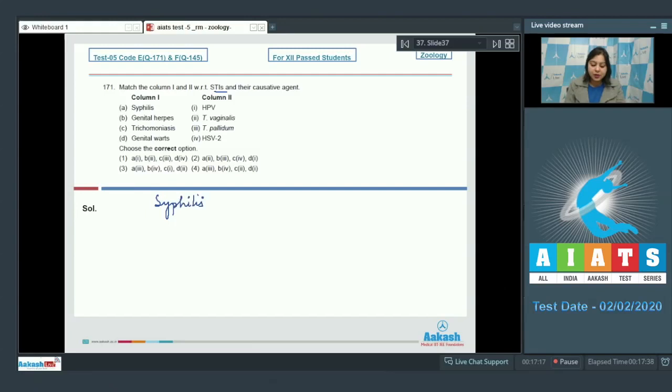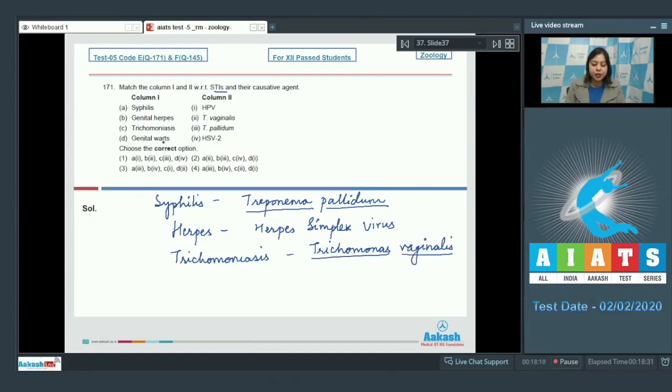Syphilis is caused by Treponema pallidum which is a spirochete. Genital herpes is caused by herpes simplex virus. Number 3, Trichomoniasis is caused by Trichomonas vaginalis. Number 4, Genital warts are caused by human papillomavirus.